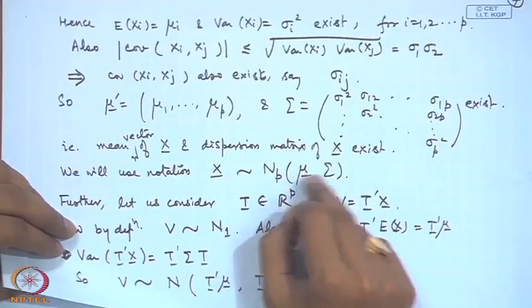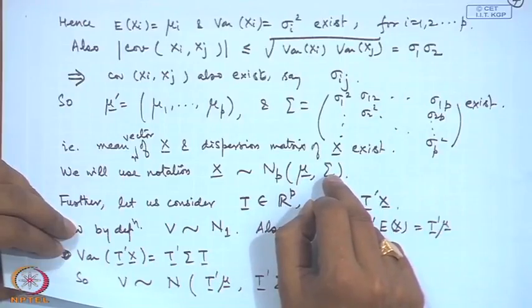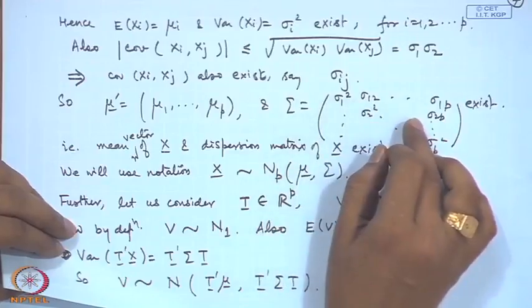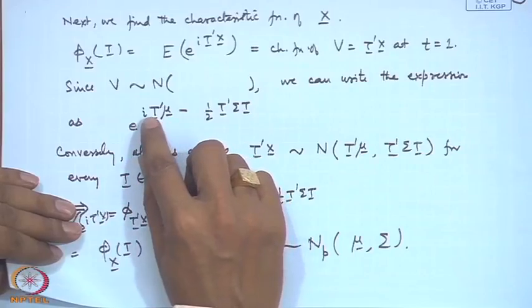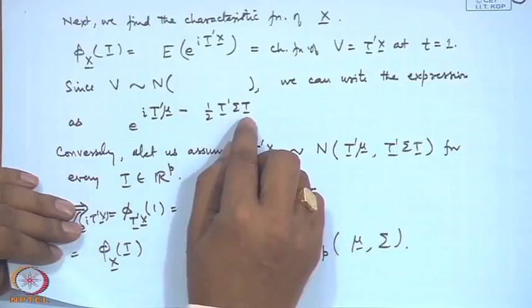Here mu is a p-dimensional vector in R^p and sigma is a p by p matrix. The nature of this matrix is that it is real symmetric, and because it is a variance-covariance matrix it is also positive semi-definite. We showed this through the definition: a'*sigma*a is non-negative. We also found the characteristic function, which is of the form e^(i*t'*mu - half*t'*sigma*t).